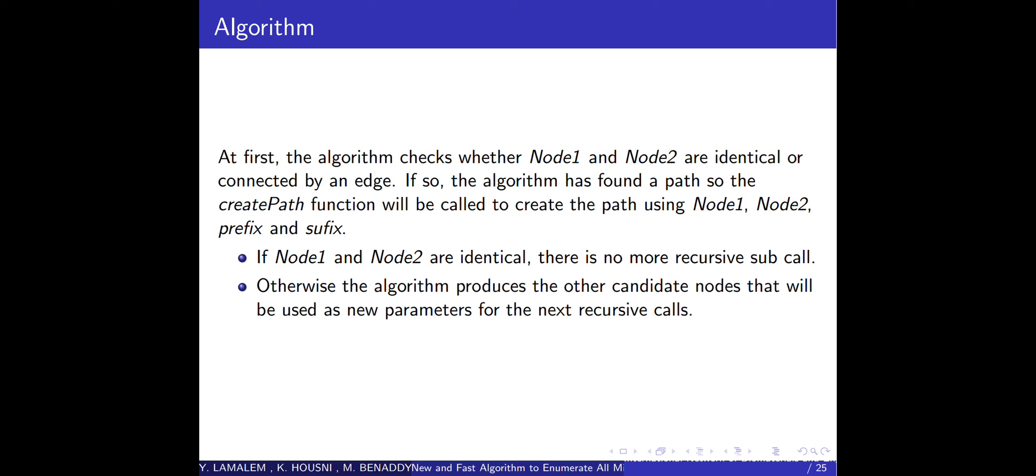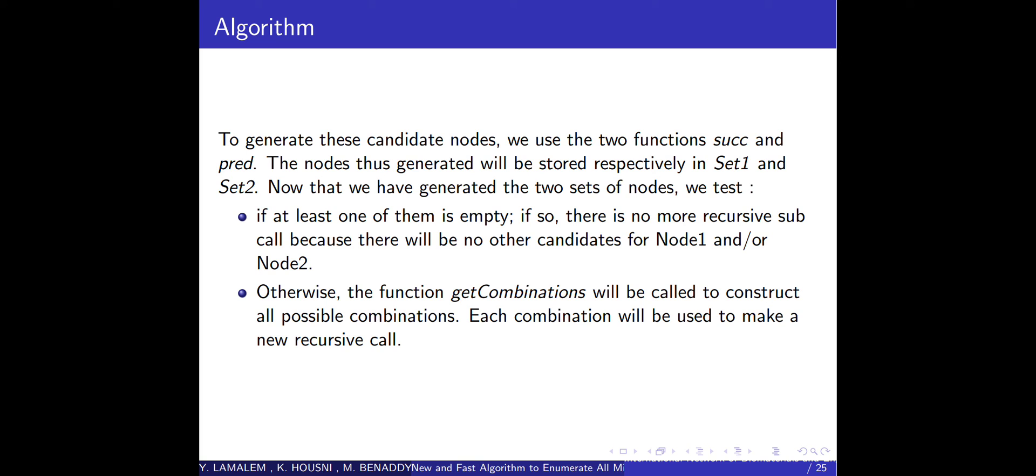Otherwise, the algorithm produces the other candidate nodes that will be used as new parameters for the next recursive call. To generate these candidate nodes, we use two functions: successor and predecessor. The nodes that are generated will be stored respectively in set1 and set2. Now that we have generated the two sets of nodes, we test if at least one of them is empty. If so, there is no more recursive subcalls because there will be no other candidates for node1 and node2.